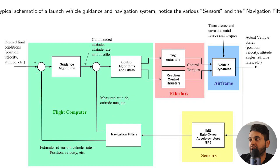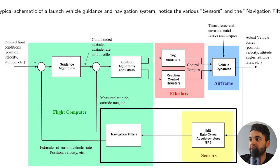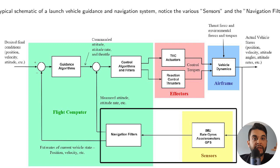Looking at this model, you have your guidance algorithms, your control algorithms and filters, and your launch vehicle model itself. SpaceX, NASA — they all have sensors on their vehicles, just like airplanes. Launch vehicles have things like an IMU (inertial measurement unit), an accelerometer, and a GPS. These sensors have noise, so they feed into the navigation filter — this is your Kalman filter — which filters out sensor noise and outputs to the flight computer the rocket's pitch angle, map location, and so on.